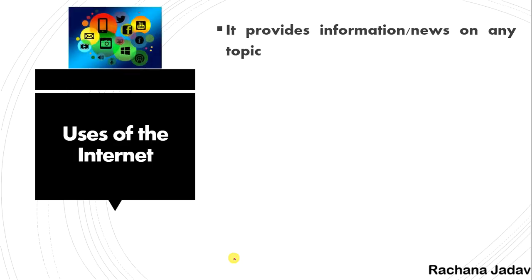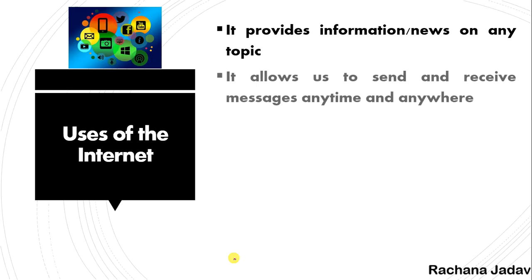Now, uses of internet — where you can use it. It provides information and news on any topic. Whatever topic you choose, you get news on it — political news, vaccine news — you will get it by internet.